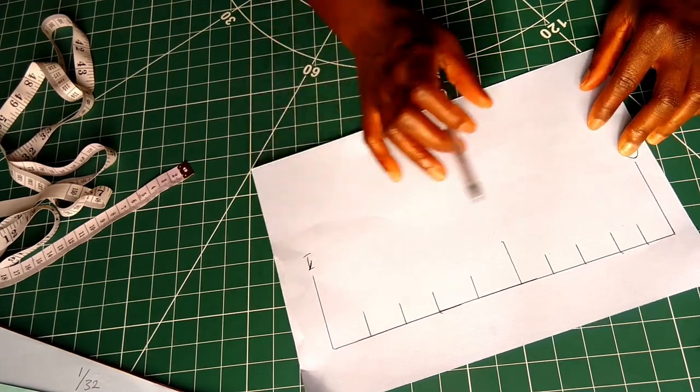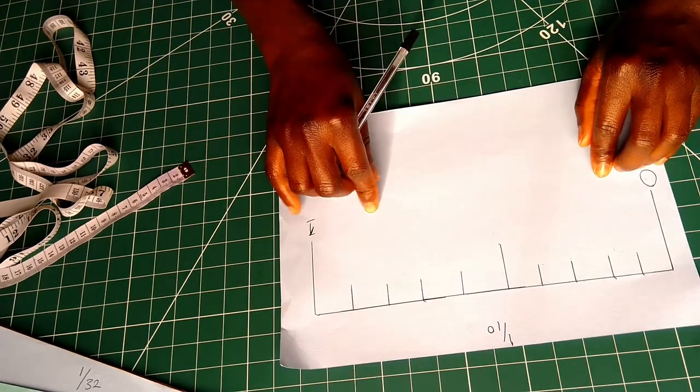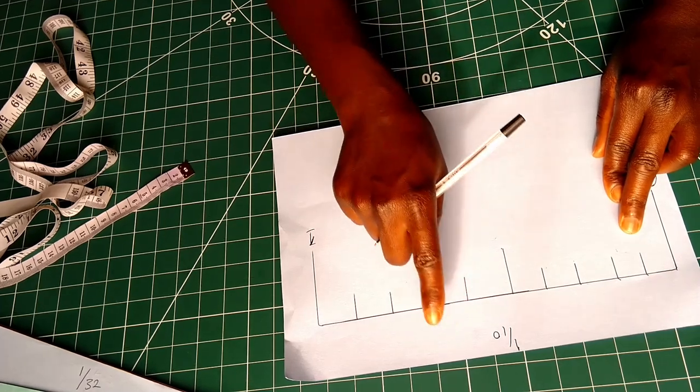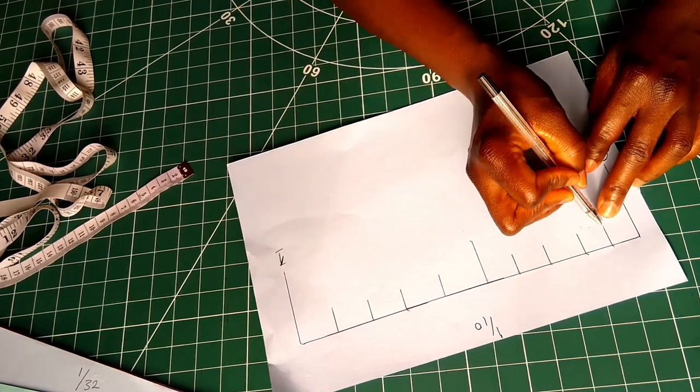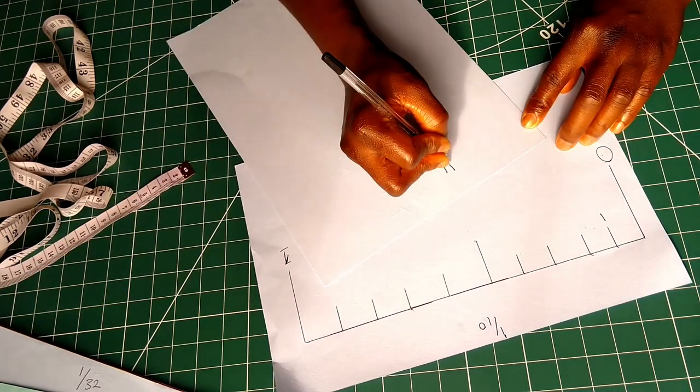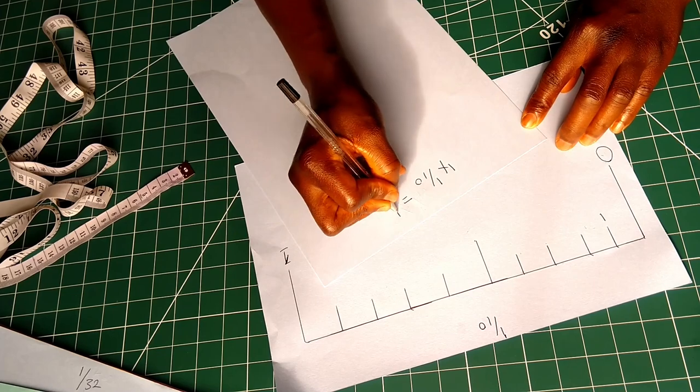10. So that means every one line increases by 1 over 10. The first line, which is line number 1, increases by 1 over 10. So 1 times 1 over 10, which is equal to 1 over 10.